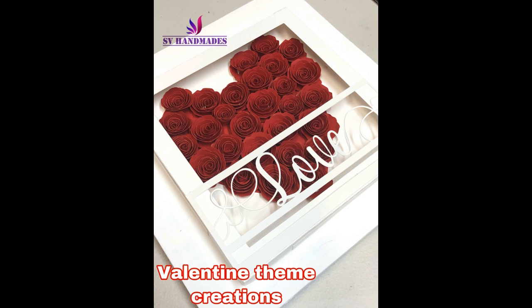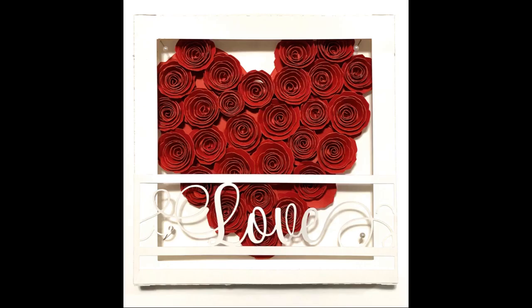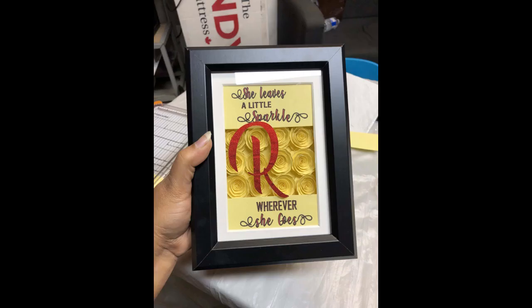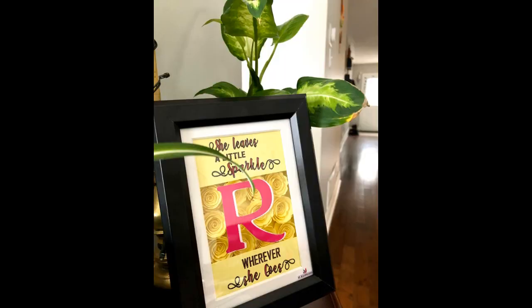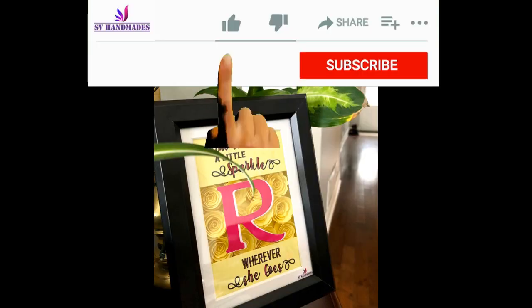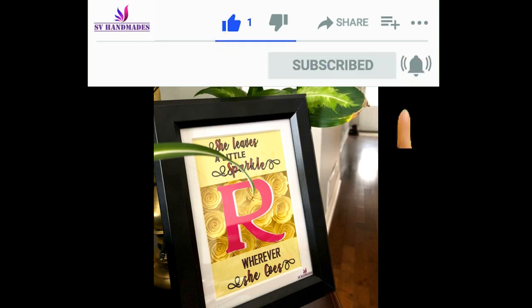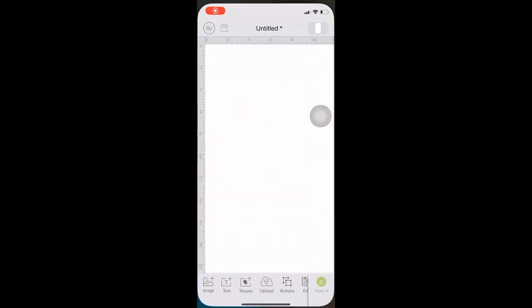Hello everybody, welcome back to SV Handmaids, and this is Shiba here. So in today's video we are going to see how to make these roses that you see I have used in these projects. So I'm going to use my Cricut cutting machine to cut out these roses. I'll be telling you the method, watch till the end. I'm going to show you how to do this even if you don't have your cutting machine.